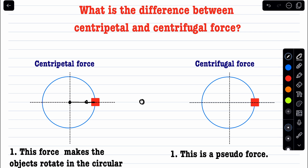Similarly, consider a hydrogen atom — we have a proton at the center and an electron orbiting it. Because there is an attractive force between the electron and the proton, that force acts toward the center, providing sufficient acceleration for circular motion.